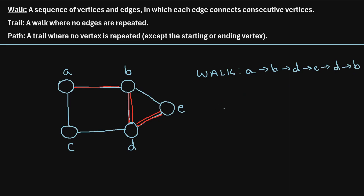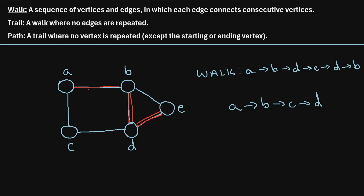An example of something that wouldn't be a walk would be: A, B, C, E. Why would this not be an example of a walk? If we consider our graph, if we go from A to B, that's perfectly valid, but then this says we need to go from B to C. Notice that there is no edge connecting B and C, so this is not even possible. This sequence would be an example of something that is not a walk.